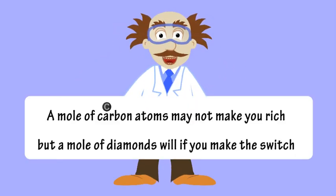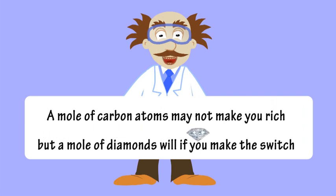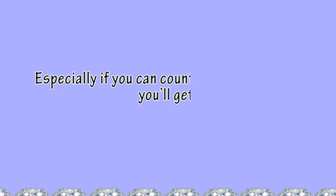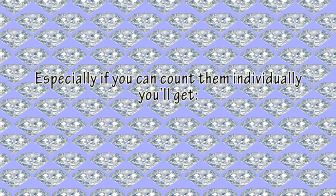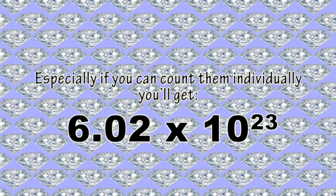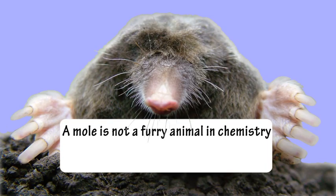A mole of carbon atoms may not make you rich, but a mole of diamonds will if you make the switch. Especially if you can count them individually, you'll get 6.02 times 10 to the power of 23.